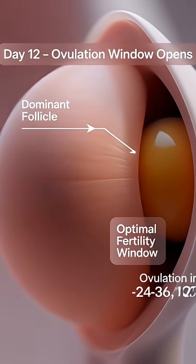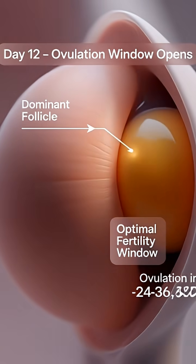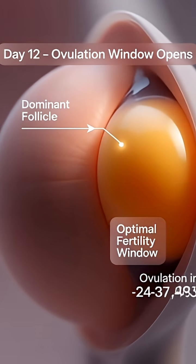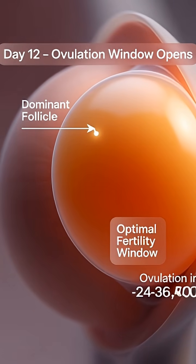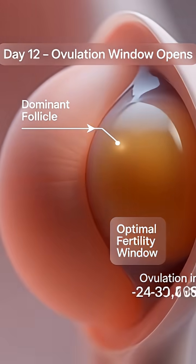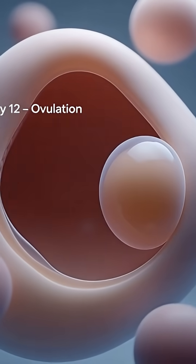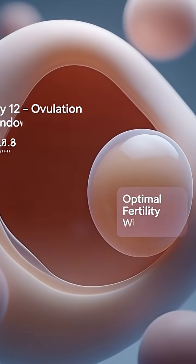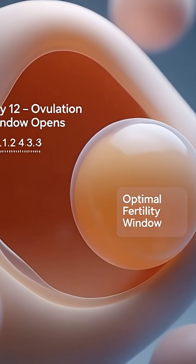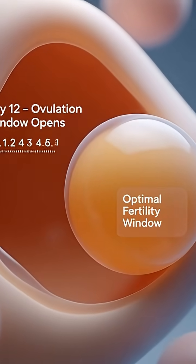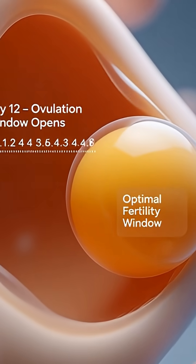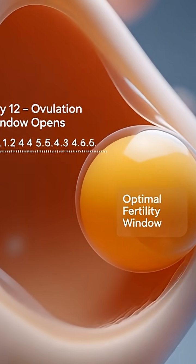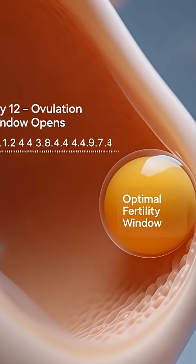Day 12. The ovulation window opens. The dominant follicle reaches peak size and presses against the ovary surface. The fertility window opens as ovulation approaches, and a countdown begins. Within the next 24 to 48 hours, the egg is likely to be released.